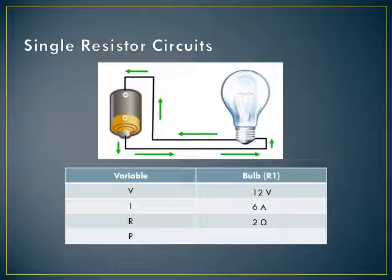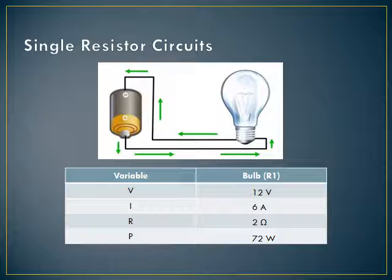Power is equal to voltage times current. We've got 6 electrons moving every second, each electron has 12 joules of energy, so every second 72 joules of energy get dumped into the light bulb. That's 6 times 12 — the number of electrons times the amount of energy each electron has — and that tells me how much power is available to be converted into other things like light and heat.